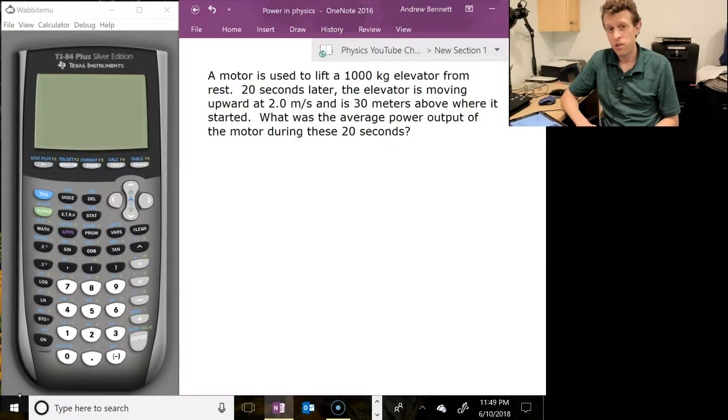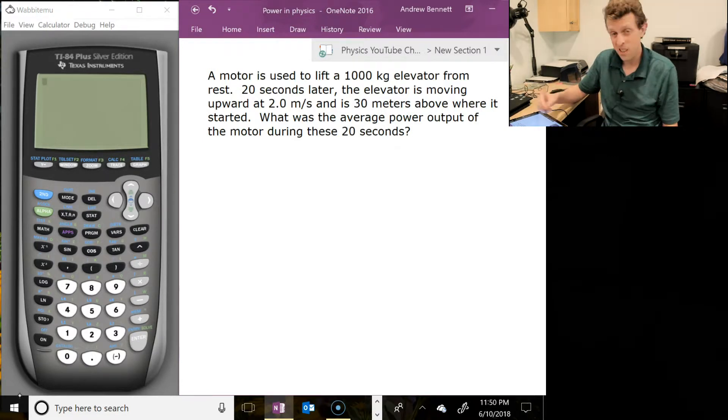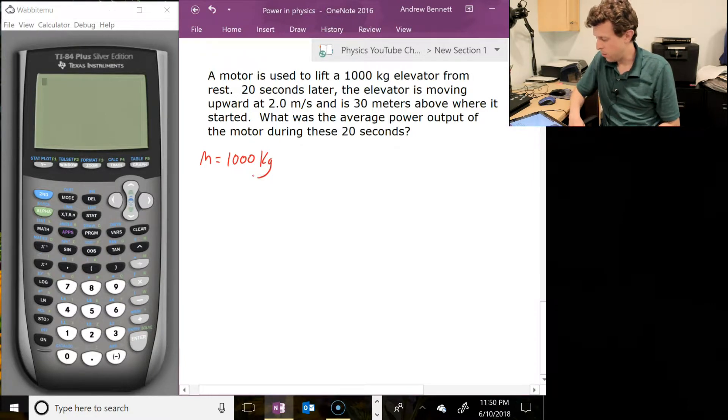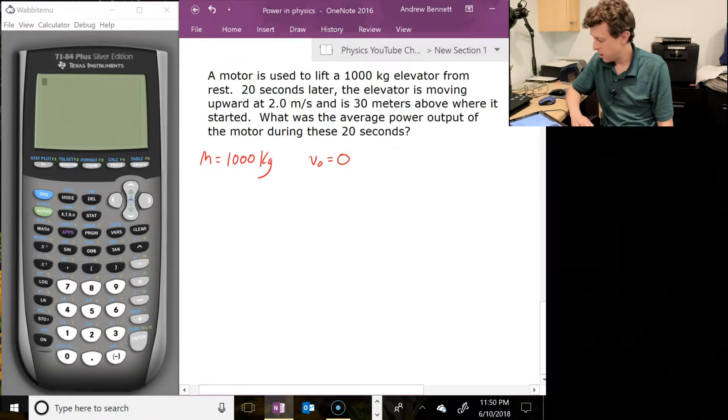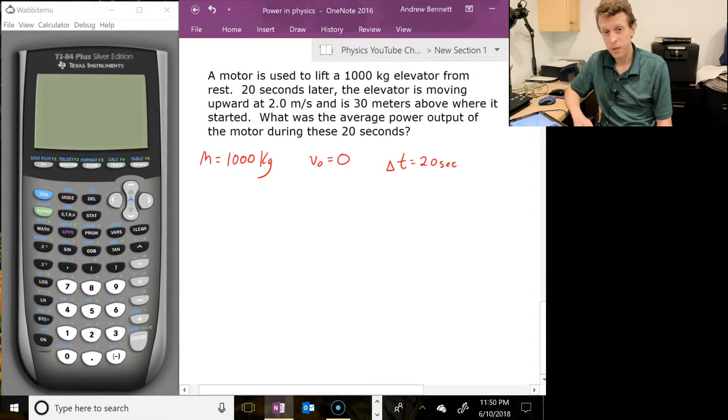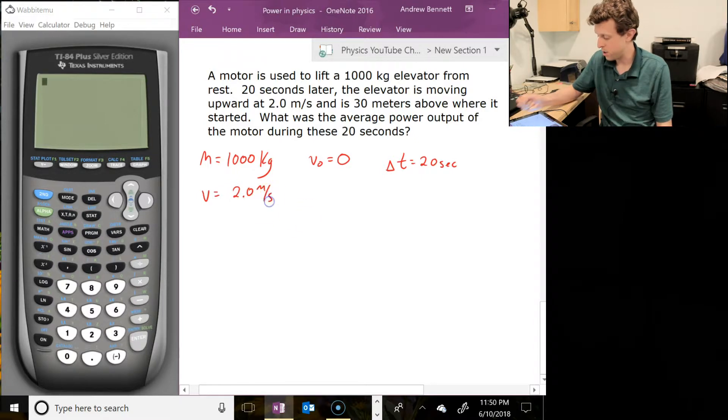One problem that shows up pretty frequently in these is an elevator problem, looking for power output on the elevator. So in this one, we're going to start with the elevator at rest. We've got a mass given to us, and I like to just put down numbers with variables as I work through these. I'm just going to put down mass at a thousand kilograms. It starts from rest, so I've got v naught at zero. So 20 seconds later, that sounds like a time measurement, delta T is 20 seconds. The elevator is moving upward at 2.0 meters per second.